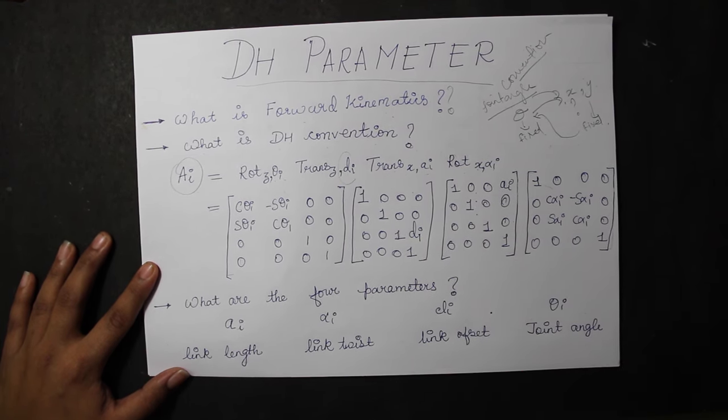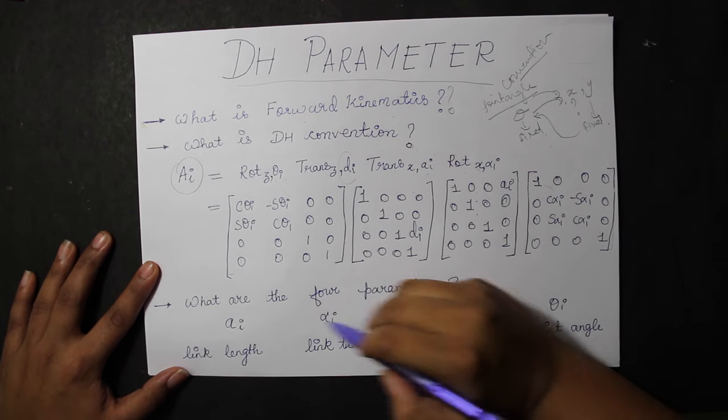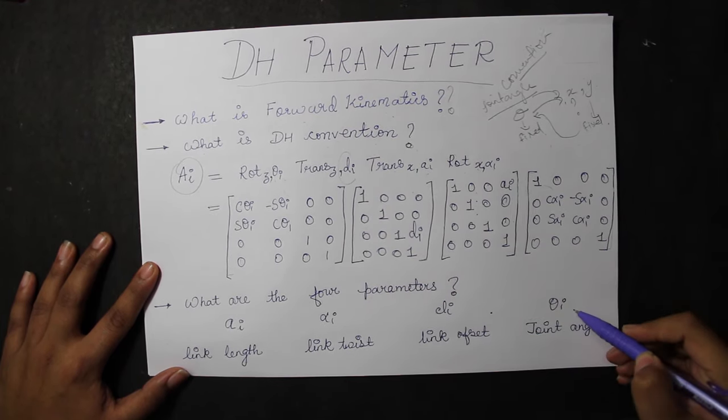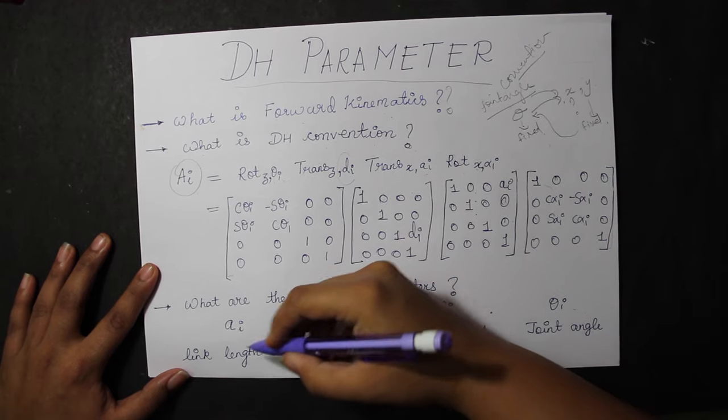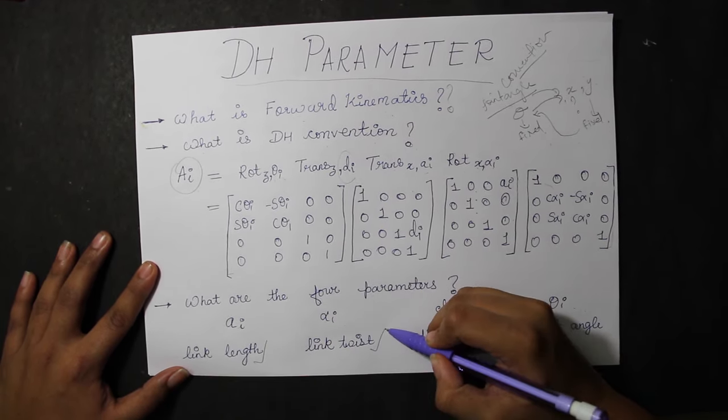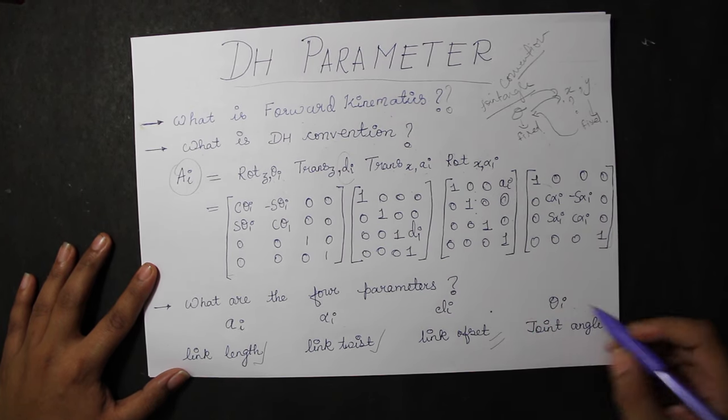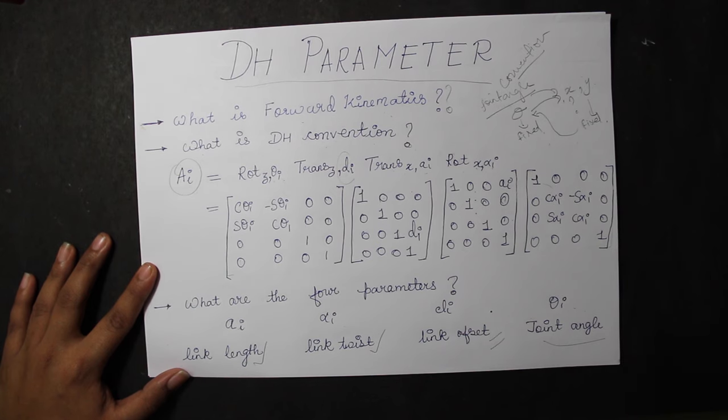So now, what are those four parameters? That is, what is AI, what is alpha I, what is DI, and what is theta I? AI is the link length of the manipulator. Alpha I is the link twist, that is, the angle it will move. DI is the link offset and theta I is the joint angle between the two.